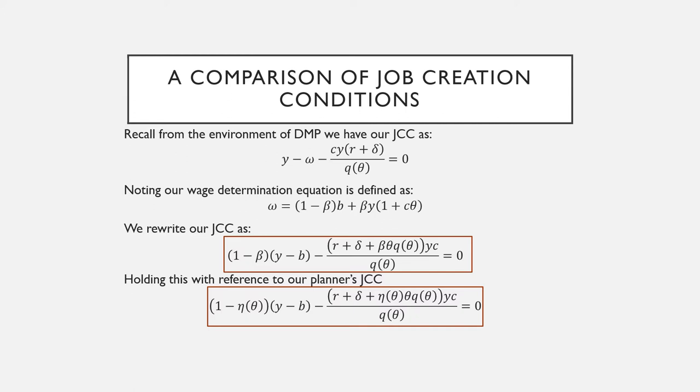In terms of comparing our job creation conditions, we first need to reformulate our job creation condition in the context of DMP by using our wage determination equation. This is a little bit different from what I've stated in our DMP model, but it could be directly derived by noting what our unemployed Bellman equation really is and what U really is.